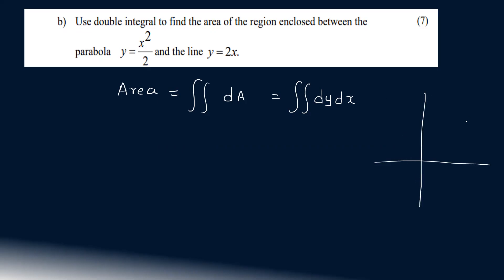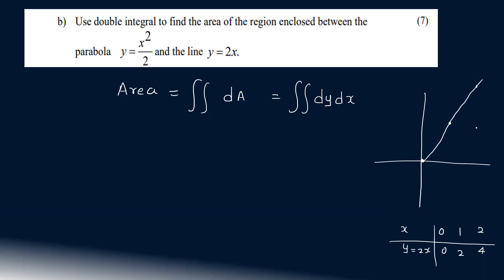Let's write the graph. For y equal to 2x: if x equal to 0, then y equals 0; if x equal to 1, then y equals 2; if x equal to 2, then y equals 4. This gives us the straight line graph with points (0,0), (1,2), and (2,4).